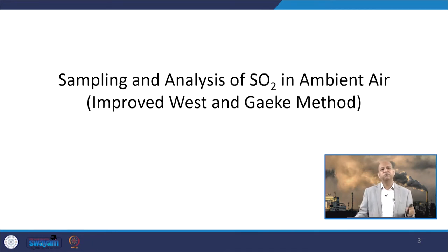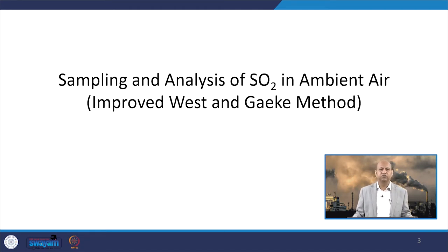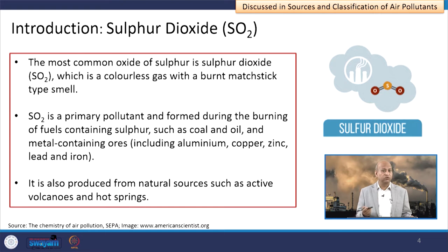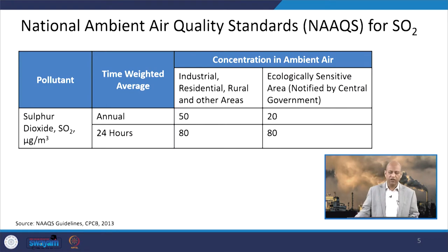First let us look into sampling and analysis of sulphur dioxide present in ambient air. Sources of SO2 are many, like coal burning or diesel-based vehicular emissions. The sampling and analysis method is known as the improved West and Gaeke method for SO2 monitoring. SO2 is known for several kinds of effects — not only health but environmental effects — because it can get converted into secondary aerosols or it can also acidify certain environmental components.